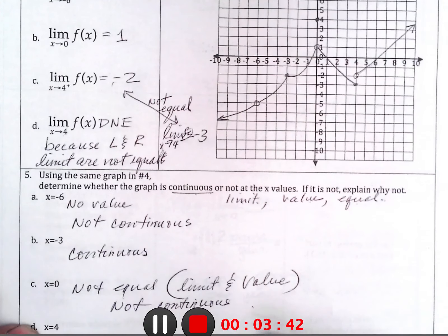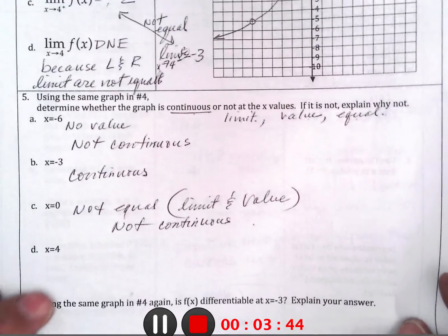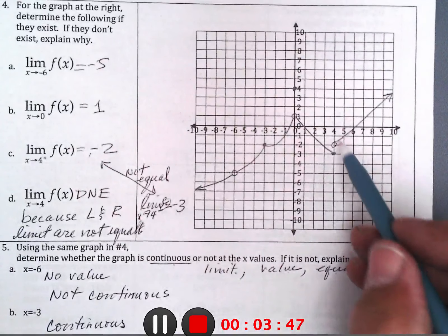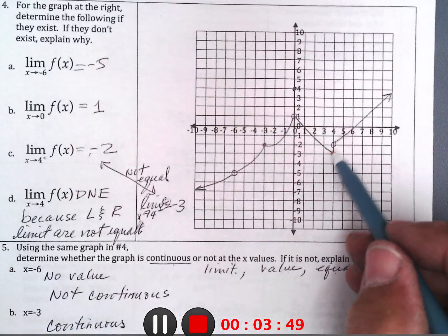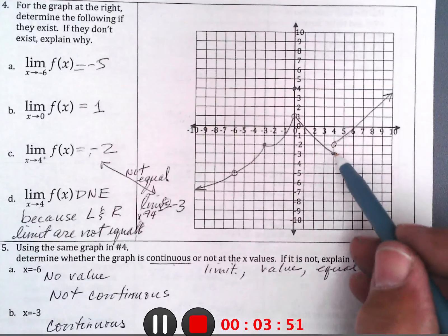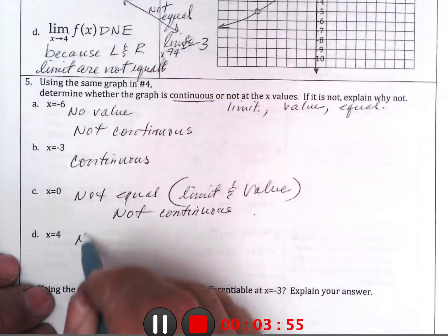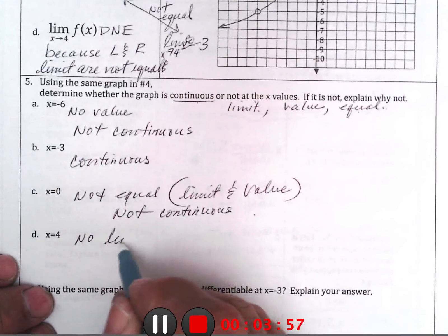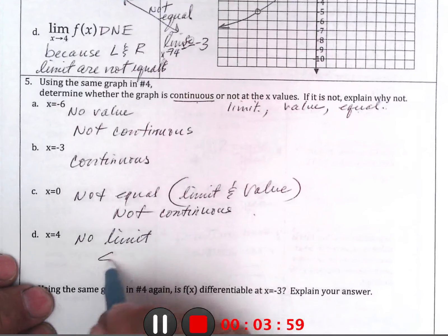And then finally, at 4. So, at 4, there's no limit, because they don't go to the same thing. It does have a value, but there's no limit. So, not continuous.